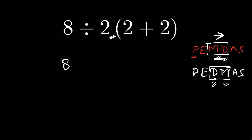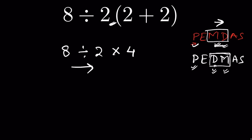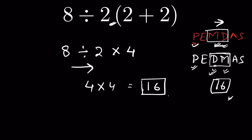So if you are following PEMDAS, parenthesis is done first: 2 plus 2 is 4, giving us 8 divided by 2 times 4. From left to right, division comes first, so we do division first. In PEDMAS you also get the correct answer because D happens to be written first. Always remember: follow the left-to-right rule. So 8 divided by 2 is 4, then 4 times 4 is 16 — 16 is the correct answer.